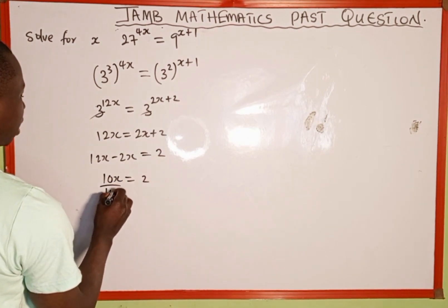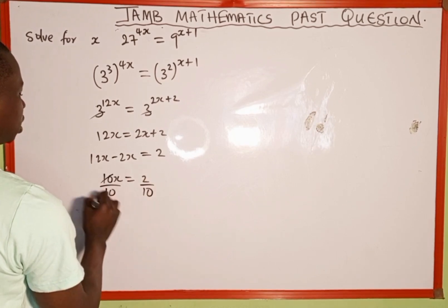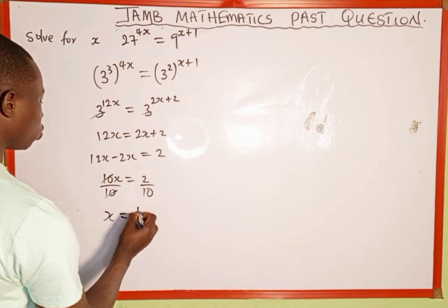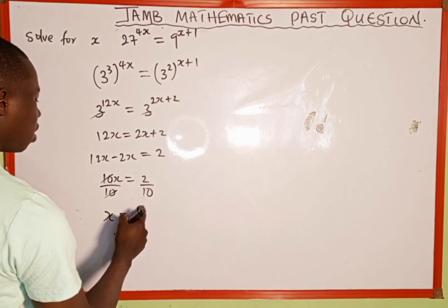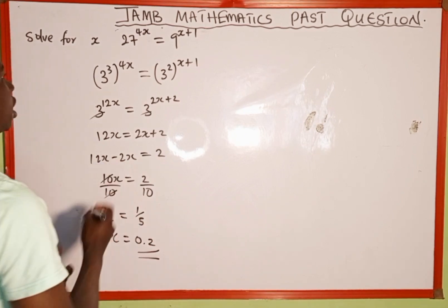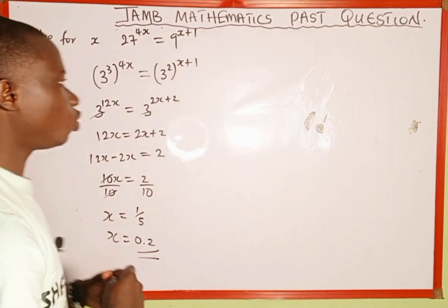Then we divide both sides by 10, so that this 10 cancels out this 10. x now equals 2 over 10, which is the same as 1 over 5, and when you divide, 1 over 5 is the same as 0.2. So here is the value of x that satisfies this exponential equation.